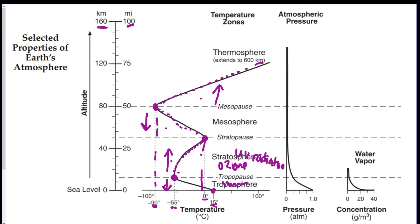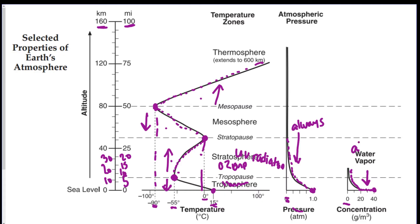Other things to notice on this graph: the kilometers and miles scales increase by different amounts — miles go up by 5, 10, 15, 20, while kilometers go up by 10, 20, 30, 40. The pressure graph shows pressure starting at 1.0 on the ground and approaching zero as altitude increases — pressure always goes down. Water vapor also starts at 40 on the ground and decreases to zero.